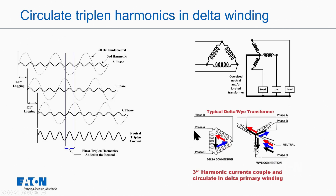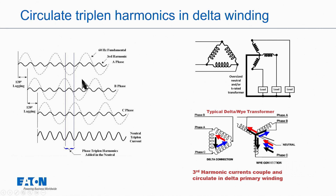Let's look at a standard delta-Y transformer. Oftentimes, we put a delta-Y transformer in to trap or recirculate the third harmonic currents in the delta winding. Current goes out on one leg, comes back on the neutral; out on the second leg, back on the neutral; out on the third leg, back on the neutral. If there's 10 amps going here and 10 amps going here, none of the current comes out of the transformer. So the third harmonics on the secondary add up to three times, but on the primary they're basically zero.